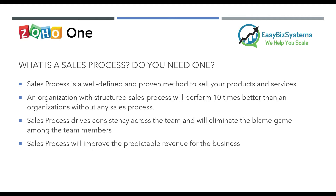Once you have ten or fifteen clients and a certain method is working, that proven method should be documented. When you have a well-defined, proven, and documented method, that becomes your sales process — something you can replicate and scale with your sales team. That's ideally how you get your first hundred clients: find out what works with the first ten, then onboard new salespeople and scale.